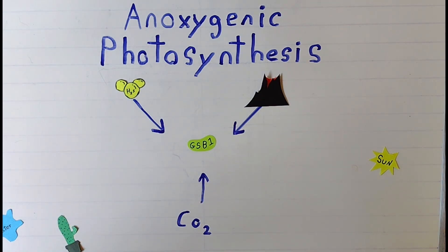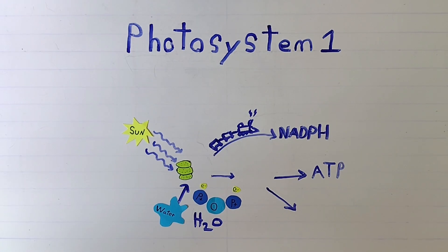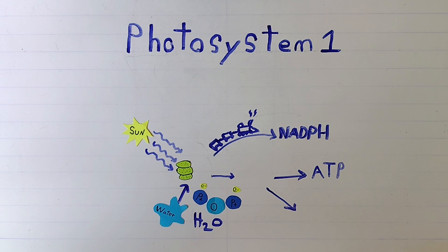Okay, let's back it up and talk about regular photosynthesis. In photosynthesis, there are two systems: photosystem 1 and photosystem 2. For the sake of this conversation, we're going to concentrate on photosystem 1, since that is where the difference lies between photosynthesis and anoxygenic photosynthesis.